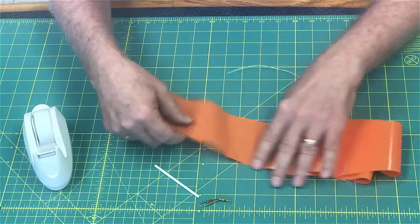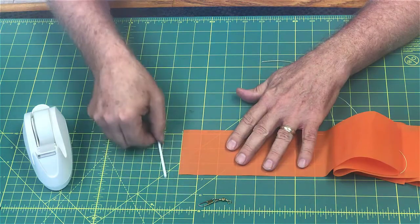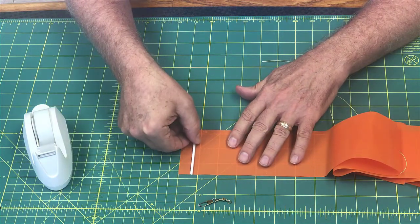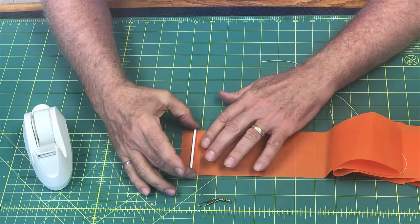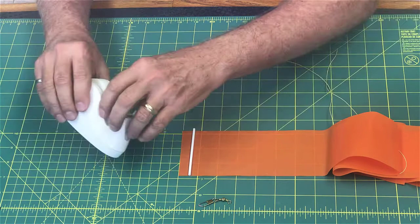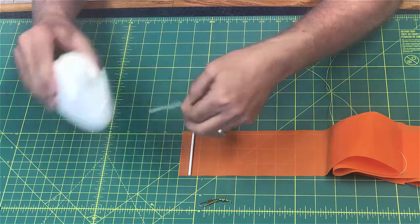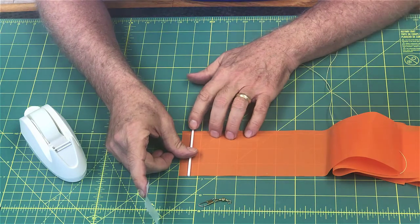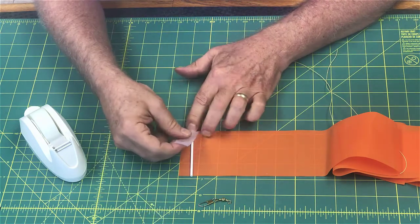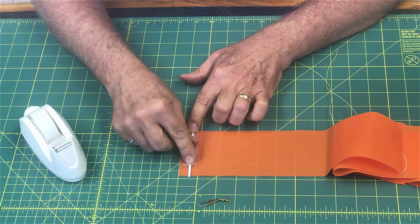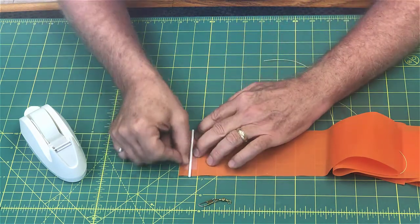To start your construction, find one end of the streamer material and place the straw about one centimeter, a half an inch from the end. Take a piece of tape, hold this straw down, and make sure the straw is a little longer than the plastic material so it sticks off over the edge on each side. Put your tape on there and tape your straw down.